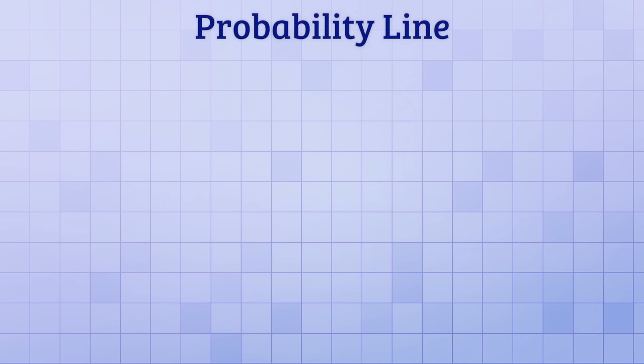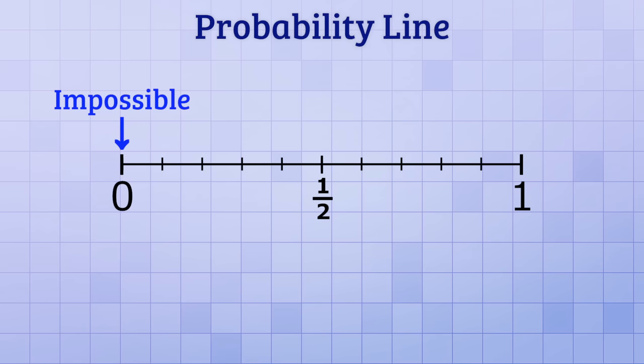Let's look at this in a little more detail on something called a probability line. It's a number line that goes from 0 to 1. A probability of 0 means that an event cannot happen. It's impossible. And a probability of 1 means that an event is definitely going to happen. It's certain. That's why the probability line only goes from 0 to 1. An event can't be less likely than impossible, and it can't be more likely than certain.